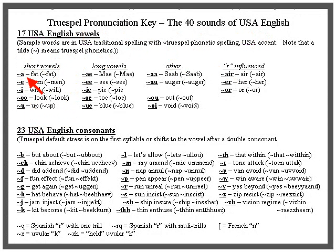Here's the A sound as in 'fat' — spelled the same way in True Spell as in traditional spelling. The E sound as in 'men.' The I sound as in 'will.' The letter O alone spells so many sounds you can't use it alone because it's confusing — it primarily spells the UH sound and then the AH sound.